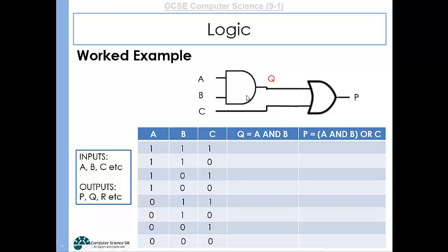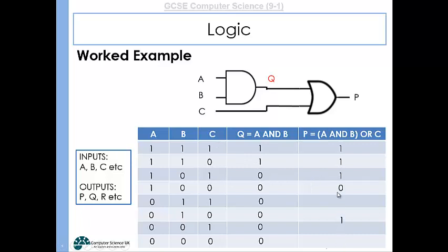First, AND A and B: when both are one the output Q is one; when one is one and the other zero, Q is zero; when both are zero, Q is zero. Then OR that Q with C. When both Q and C are one, the output is one. If either one is one the output is one. When both are zero the output is zero. Working through each row: 1, 1, 1, 0, 1, 0, 1, 0. That is the completed truth table for that logic circuit.